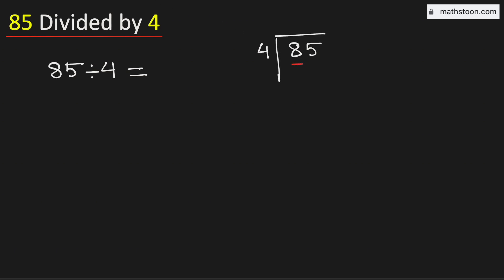Consider the first digit 8. We know that 4 times 2 is 8. Subtract, we get 0.